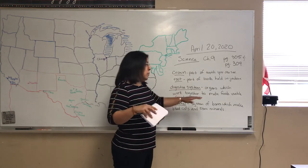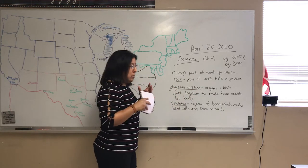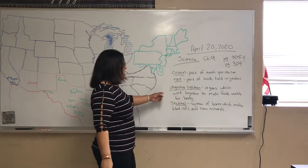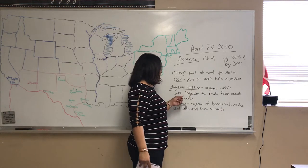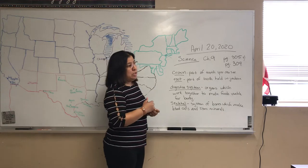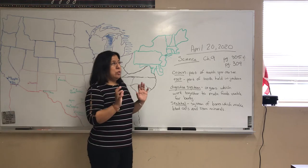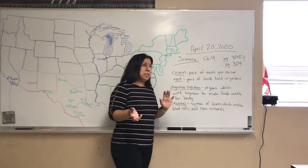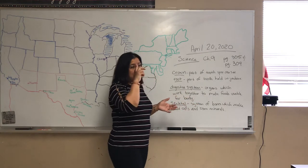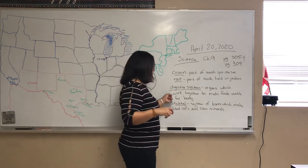We're going to go through the word 'system' again. System means not only the organ, but the certain body parts that kind of work together for a certain purpose. So the digestive system is the organs which work together to make foods usable and digestible. It's not only your stomach working — it's also your small intestine, your large intestine, your esophagus, your mouth, and your tongue, because that's the first part of the digestive system where you chew your food. So all of that coming together is the digestive system.